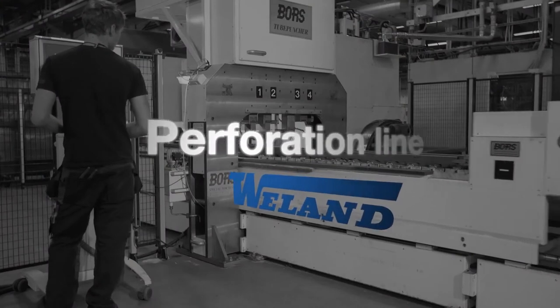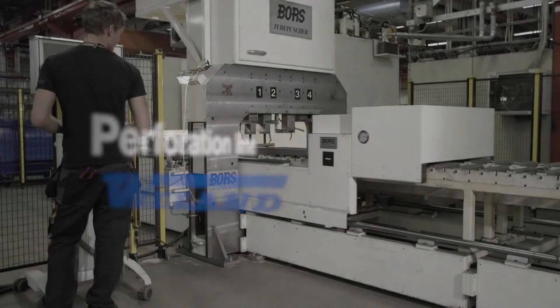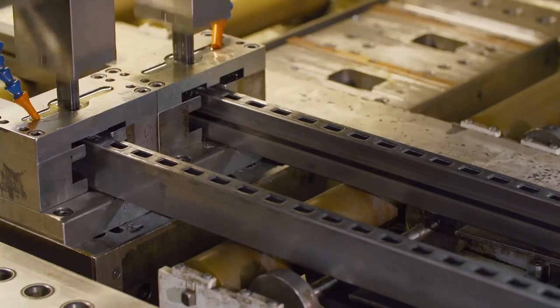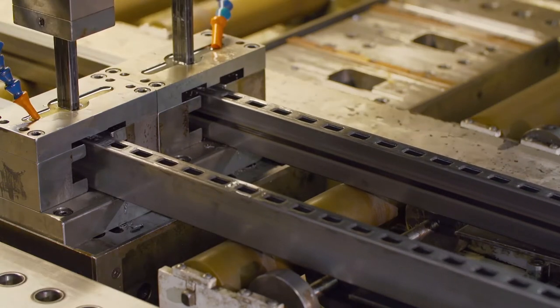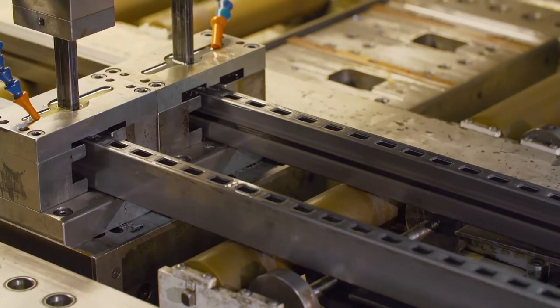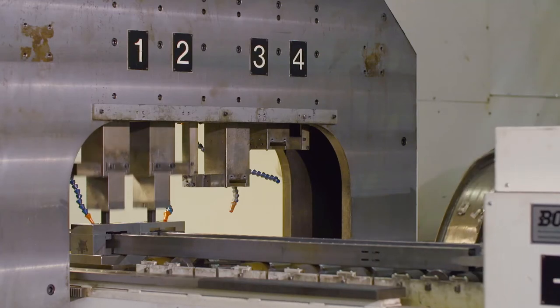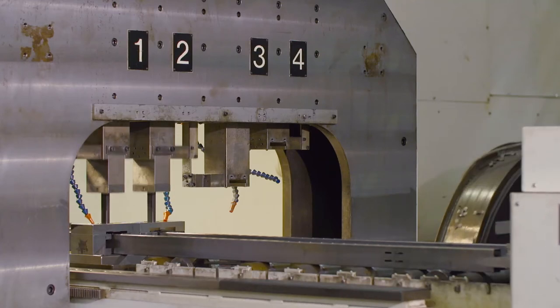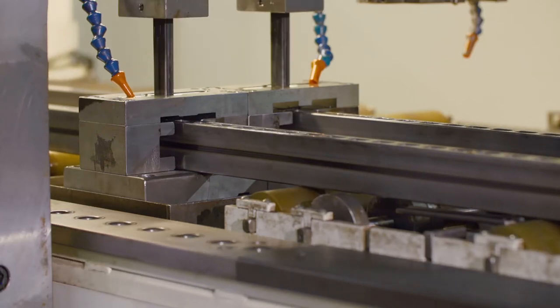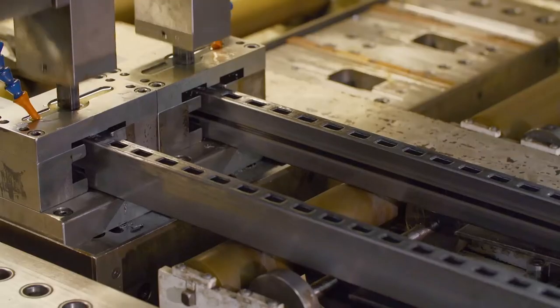Perforation line. We punch holes in square tubes in a variety of dimensions. We can punch four tubes at a time, which makes the production very quick and efficient. We produce tools for new hole patterns or tube sizes as needed.